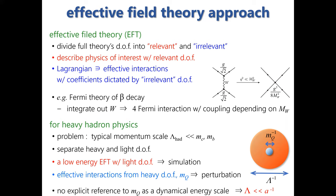We consider separating the heavy and light degrees of freedom and constructing a low-energy EFT with the light degrees of freedom, where the Lagrangian consists of effective interactions determined by the heavy degree of freedom and the quark mass. The constructed EFT has no explicit reference to the heavy quark mass as a dynamical energy scale, so we do not need a lattice cutoff uniquely larger than the heavy quark mass — it is sufficient to use a cutoff substantially larger than the typical momentum scale.